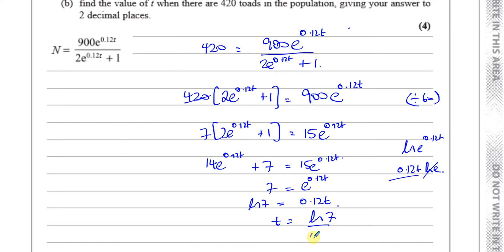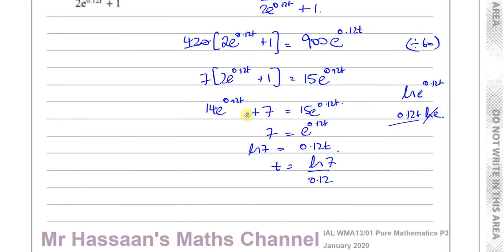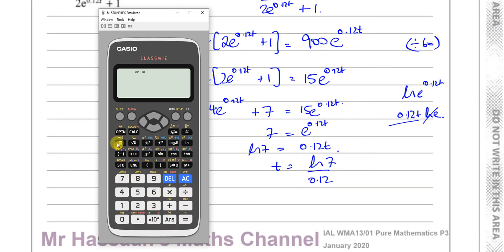So we want to find what t is. I can divide both sides by 0.12. So it's ln 7 over 0.12, and now we can find what t is. So we can stick this in a calculator. ln 7 divided by 0.12, and that gives us 16.2159.